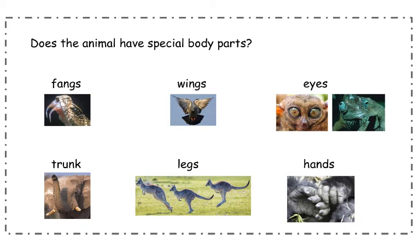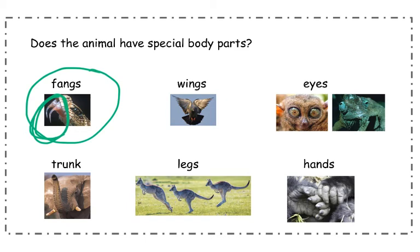The next question is, does the animal have special body parts? A snake has lots of different body parts, but one that's really special is their fangs. Do you see their fangs here? Lots of snakes use their fangs to help them catch their food, but some snakes also have venom in their fangs. So fangs are special for snakes — not all animals have those.